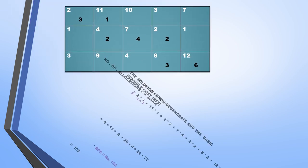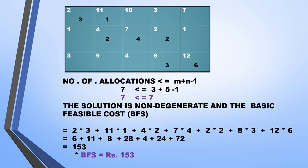Now we reconstruct the entire block and make allocations to the corresponding cells. The number of allocations is 7, number of rows is 3, and number of columns is 5. So m plus n minus 1 equals 3 plus 5 minus 1 equals 7. Since allocations equal m plus n minus 1, the solution is not degenerate. The minimum transportation cost is obtained by multiplying Cij with the respective allocation: (2×3) + (11×1) + (4×2) + (7×4) + (2×2) + (8×3) + (12×6) = 153. Therefore, 153 is the minimum transportation cost for transferring the commodity from source to destination.